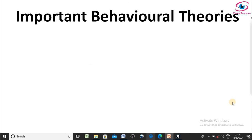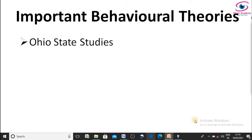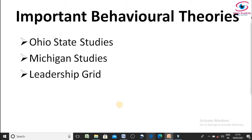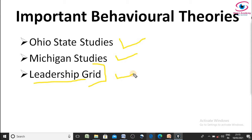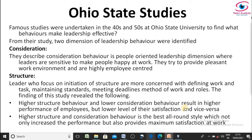Now let us move on to understand the important behavioral theories. Such important behavioral theories are: Ohio State Studies, Michigan Studies, and the Leadership Grid or Managerial Grid. These are three very important and widely used behavioral theories. The Leadership Grid or Managerial Grid will be explained in the next lecture. In this lecture, I will cover Ohio State Studies and Michigan Studies.